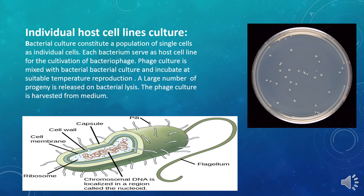When the culture is observed after incubation, a large number of phage progenies lyse the bacterial cells and emerge outside them. This is the complete process of cultivation of bacteriophage on individual host cell line culture.